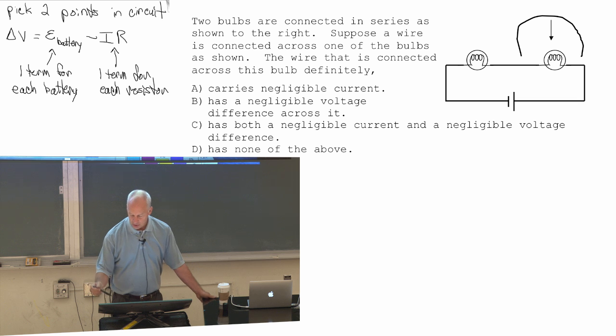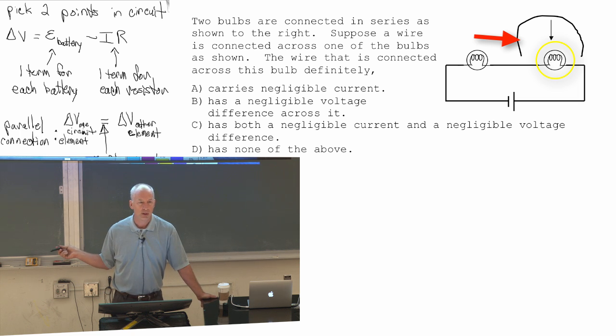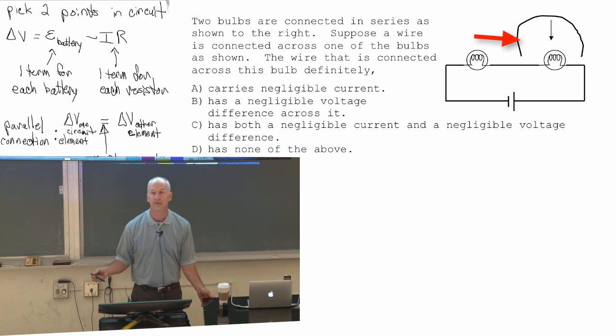Now in the last one, we argued that because this is in parallel with the bulb, that these two, this wire and that bulb, after you connect the wire, have the same voltage difference. Now suddenly, we see that this wire has zero voltage difference.